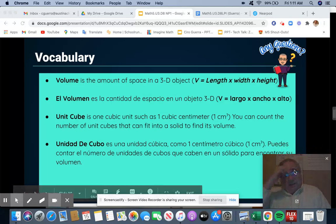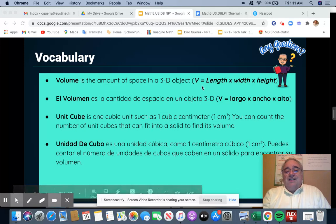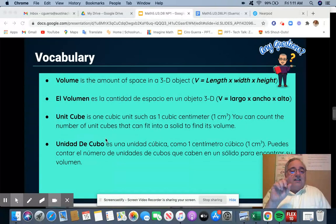I do have two pages. We have volume on here. That's the amount of space in a 3D object. The formula is length times width times height. A unit cube means that that cube has one, or the length, width, and the height are all the same.